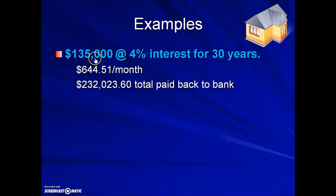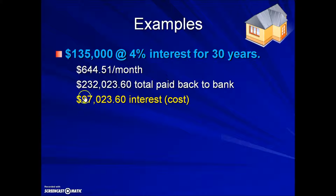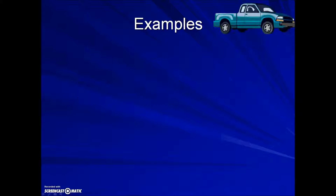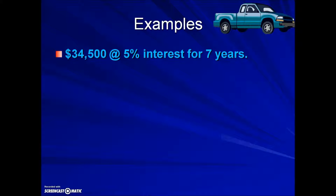Subtracting what you originally borrowed from what you paid gives you the interest, or the cost of this loan. When you compare that $97,000 to the $135,000 that was borrowed, you are paying an additional 72%, or about three-fourths more than what you originally borrowed.